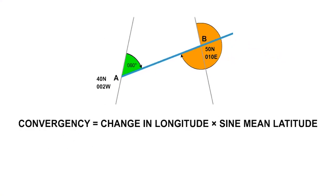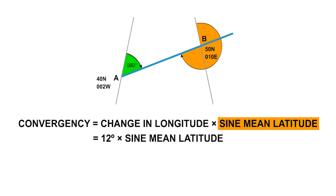Convergency equals change in longitude times the sign of the mean latitude. The change in longitude is from 2 west to 10 east. That's 12 degrees. The mean latitude is 45 north. That's halfway between 40 and 50. The sign of 45 degrees is 0.7071. So the convergency is 8.5 degrees.